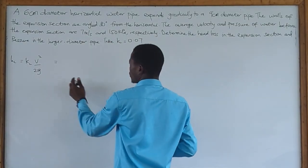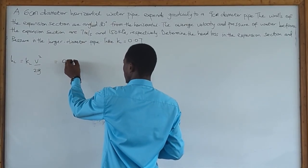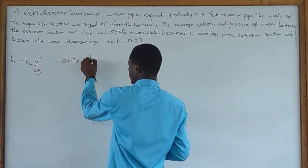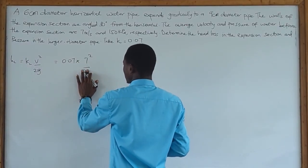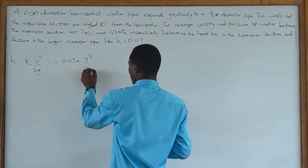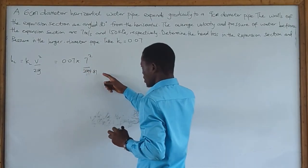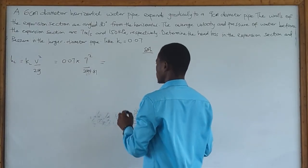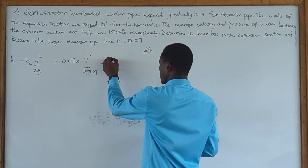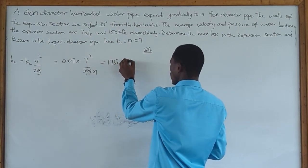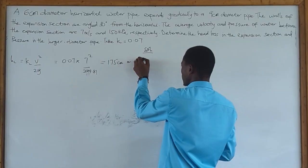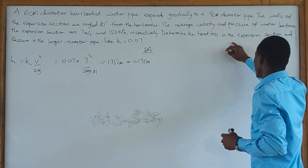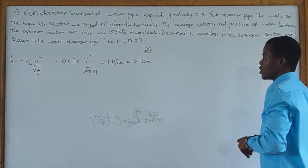For the head loss, we have KL to be 0.7 times the velocity, which is 7 squared over 2G, which is 9.81. This gives us 1.75 centimeters or 0.175 meters. So this is our head loss for the first aspect of the question.